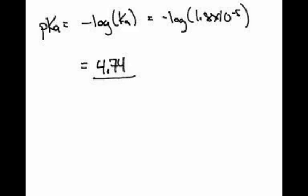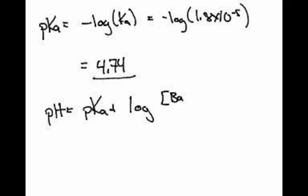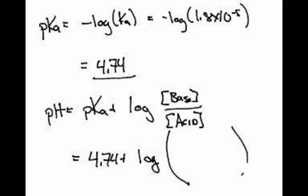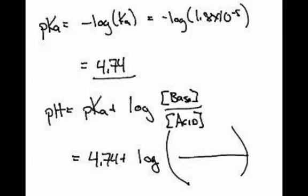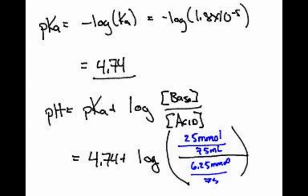So the equation is pH equals pKa plus the log of the base concentration over the acid concentration. So 4.74 plus the log of the base. Now, I want to go back where we found our concentrations. We had 25 millimoles over 75 milliliters. So I'm going to say 25 millimoles - wait, is that the acid or the base? That one is the base. Yeah, you're fine. 25 millimoles over 75 milliliters. And then this other number was 6.25 millimoles divided by 75 milliliters.